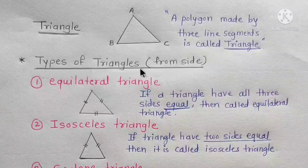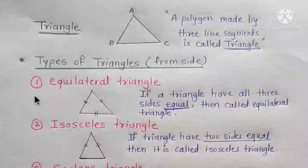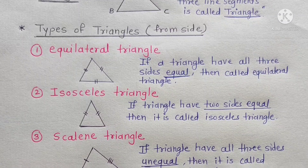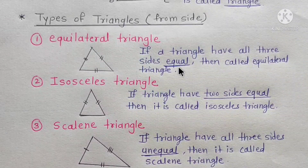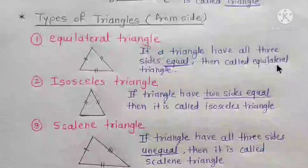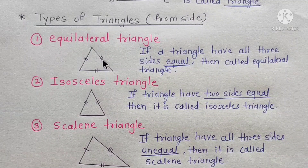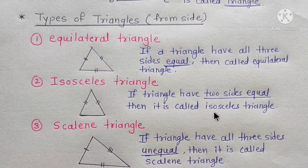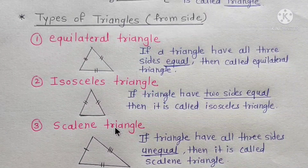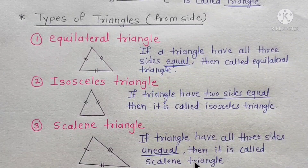Types of triangles according to sides: The first type is an equilateral triangle — if a triangle has all 3 sides equal, it is called an equilateral triangle. The second type is an isosceles triangle — if a triangle has 2 sides equal, it is called an isosceles triangle. The third type is a scalene triangle — if a triangle has all 3 sides unequal, it is called a scalene triangle.